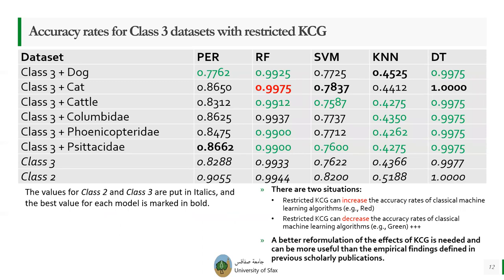When analyzing the accuracy rates for the restricted knowledge-driven class generalization, we found two situations. The situation highlighted in red shows that restricted knowledge-driven class generalization can increase the accuracy rates of classical machine learning algorithms. The situation highlighted in green shows that restricted knowledge-driven class generalization can decrease the accuracy rates. Therefore, we need to define a better formulation of the effect of knowledge-driven class generalization, because this will allow us to explain it better than the empirical findings defined in previous scholarly publications.